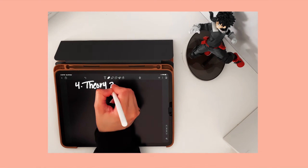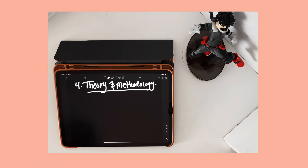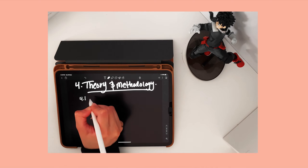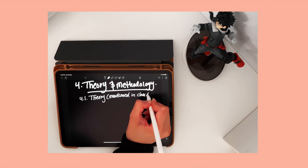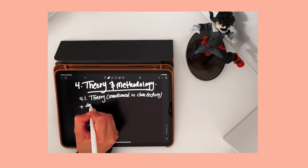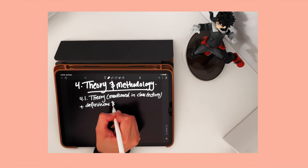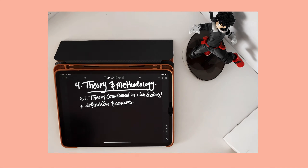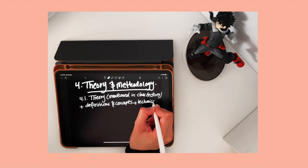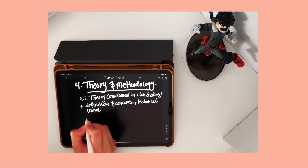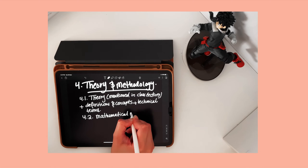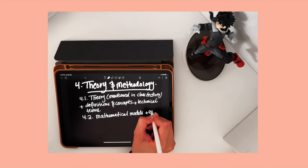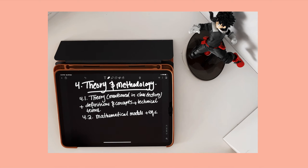The theory and methodology section should contain the theory part of the project — that means all the definitions of any technical term presented in the report. Usually this is covered in the lecture section of the course. You should assume that the person reading the report is not an expert and does not have adequate background information about the problem. For example, if you are running an experiment on a wind tunnel, you should introduce the concept and functionality of the wind tunnel first. It is important to mention all the mathematical models and equations used for calculations, with each parameter named after each equation along with their units, and all equations numbered correctly.